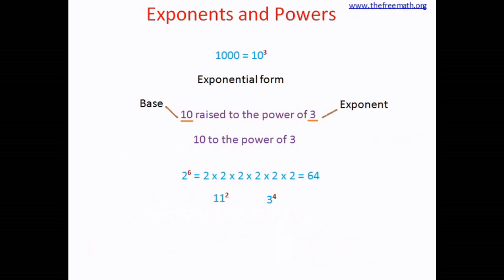Let's come back to the exponential form. So far you have seen exponential forms of different numbers. But in algebra, we use letters — they are called variables. Let's try using a variable: A to the power of 5. The base is A, so we multiply A five times: A×A×A×A×A. We used a variable for the base. How about using a variable for the exponent as well? A to the power of N will be A multiplied by A and so on, N times. If N is 3, you multiply 3 times; if N is 100, you multiply 100 times.